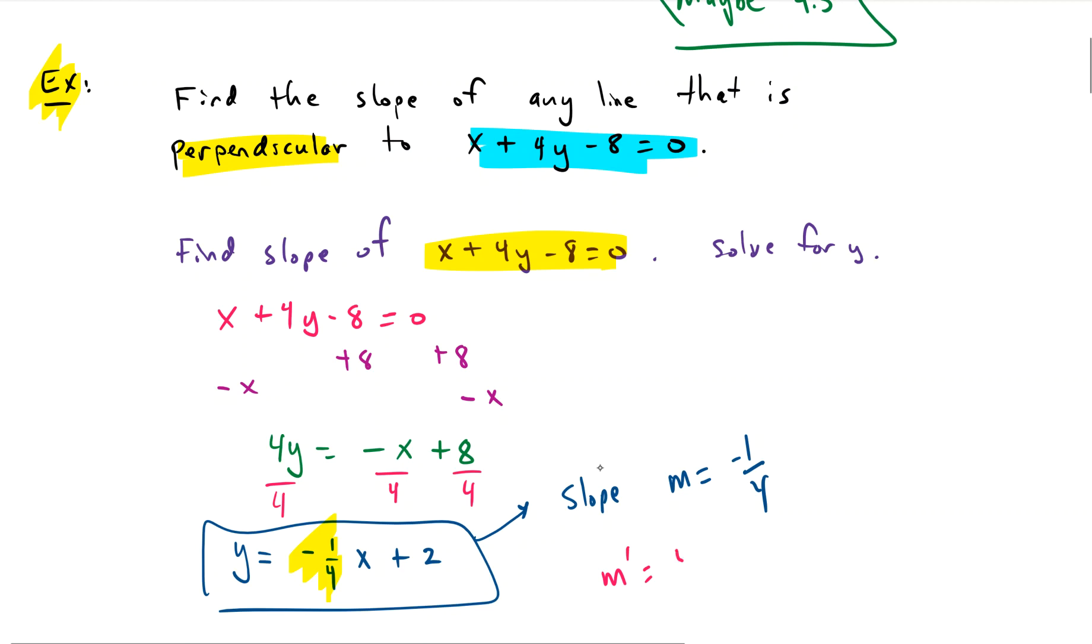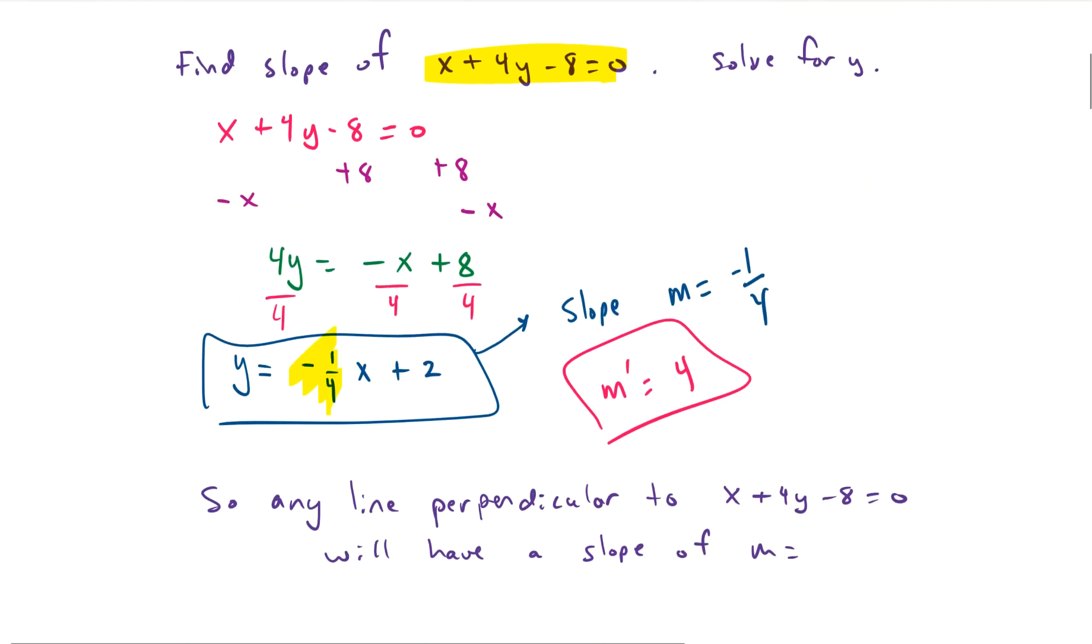The negative reciprocal would be you flip it. So 1 fourth becomes 4 over 1, and you change the sign. It starts negative and becomes positive. So the answer to our question is any line perpendicular to x plus 4y minus 8 equals 0 will have the slope of 4.